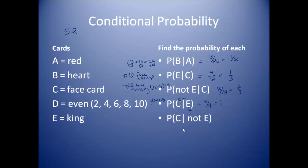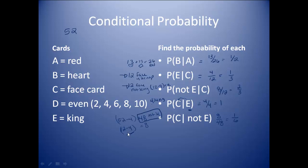Our last one: the probability of C given not E. Not E means I do not have a king — I have not drawn a king. So there are 52 cards in the deck; take out the 4 kings, and that leaves 48 non-kings I'm picking from. It wanted to know the probability of getting a face card. There are 12 face cards, but since it's not a king, I take out those 4 kings, leaving 8. So I have an 8 out of 48 chance, which is 1 out of 6.